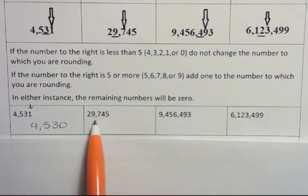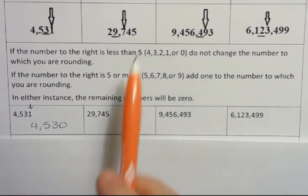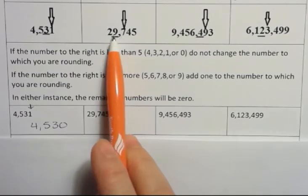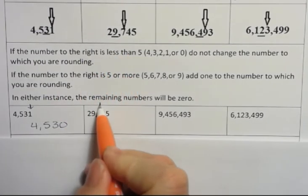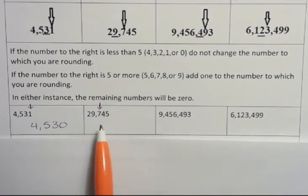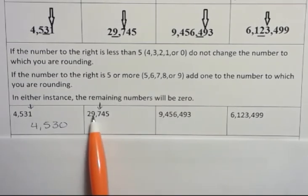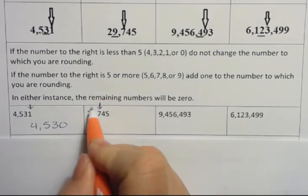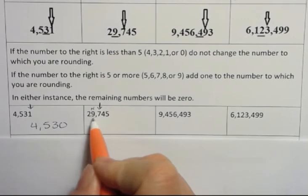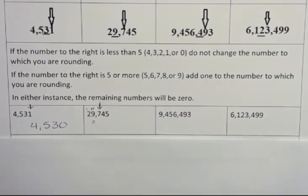If I want to round 29,745 to the thousands place, I'm looking at this number. And this is a little tricky because it's 7, which means we're going to add 1 to 9, but we can't write 10 there. If I add 1 to 9, that's going to make 10, and I'm going to have to carry that number. That 0 is going to go, but then the 1 is going to carry to the next number.